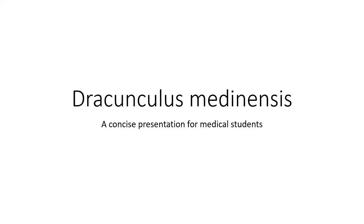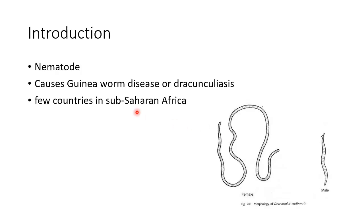Hello guys, this is Indian Medico and in this video we are going to see about Dracunculus medinensis. This is a concise presentation for medical students. Dracunculus medinensis is a nematode, also known as guinea worm. It causes guinea worm disease or dracunculiasis. This disease is found in a few countries in Sub-Saharan Africa.